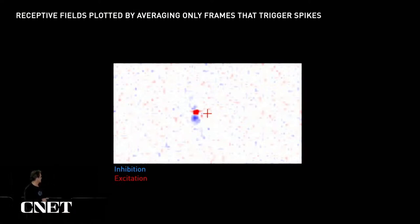The central cross is the fixation point, and you can see the little red and blue regions of excitatory and inhibitory receptive field. These regions give cortical cells some of their characteristic properties.